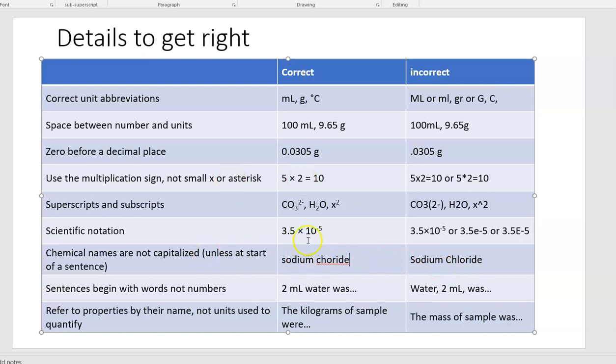So look through these, use subscripts and superscripts. This is a small one, but there is a symbol for the multiplication sign in your word processor. So you don't want to use the small x, you don't want to use the asterisk. It's nice to use the multiplication sign. And if you go to insert symbol in Word, you'll be able to see it.